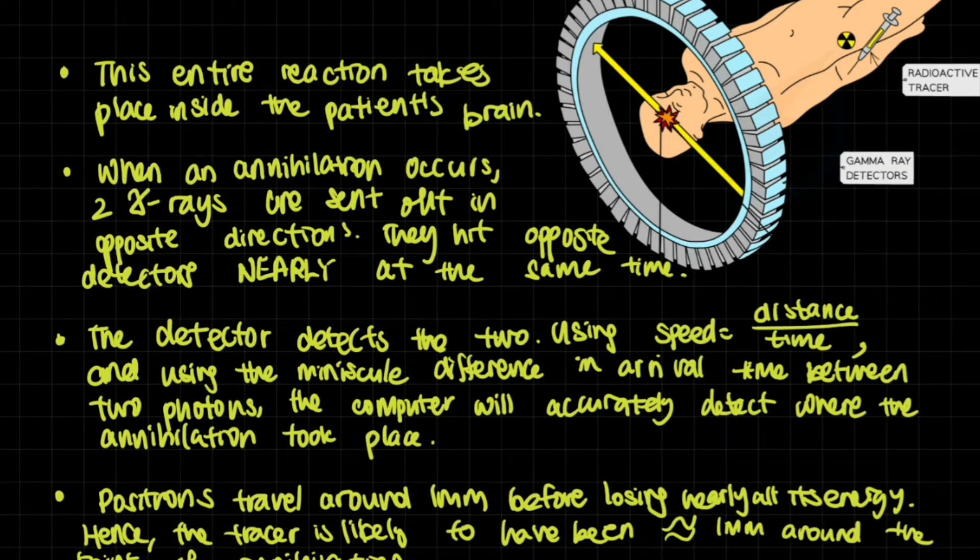So now we've established that there is a radioactive tracer. It gets made into a glucose kind of thing, and then it gets introduced into the body, and then it gathers itself around cancer cells. Then there is annihilation that happens, sending out gamma rays in 180 degrees to each other. What happens after that, and how do we detect it?